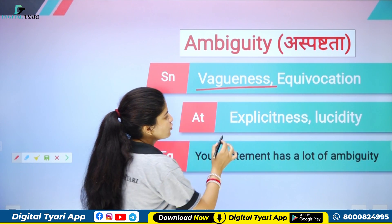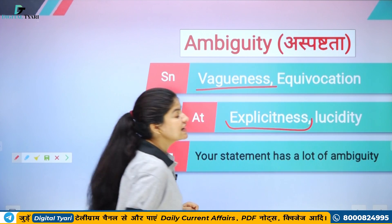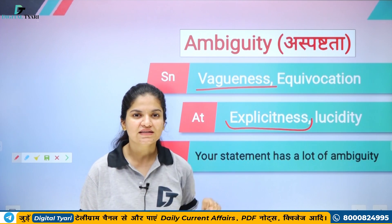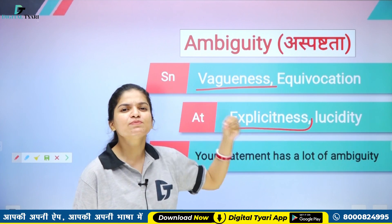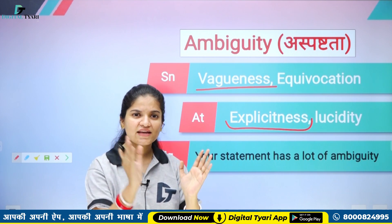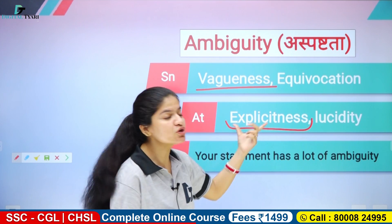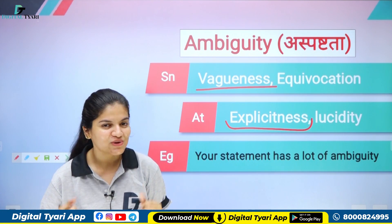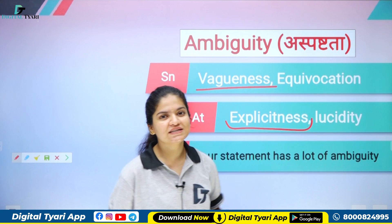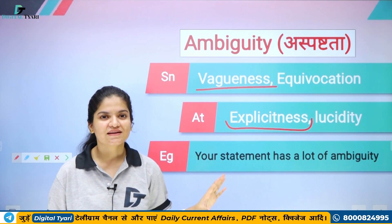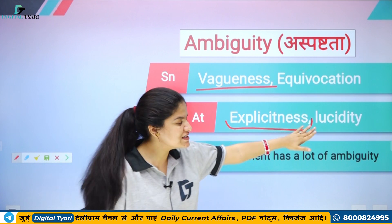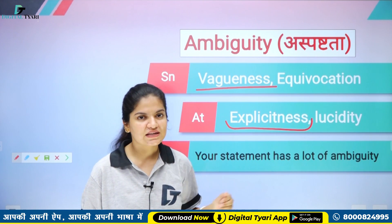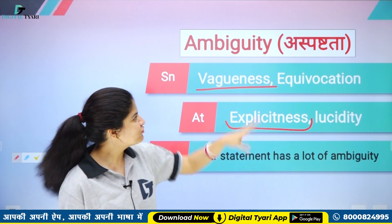Iske antonyms dekhte hain ambiguity ke. Toh ho jayega: explicitness — explicit, yani completeness, ekdam clearness. Koi cheez explicit hai, seedhi seedhi baat ki gayi hai, iska ek hi matlab nikal raha hai — toh explicit ho jayegi woh cheez, toh explicitness hona yani koi cheez clear hona. Lucidity — koi cheez lucid hai, matlab complete hai, clear hai, saaf saaf hai. Lucidity aur explicitness ka matlab hota hai jab koi cheez clear hai — aur jo cheez clear nahi hai woh hogi ambiguity.